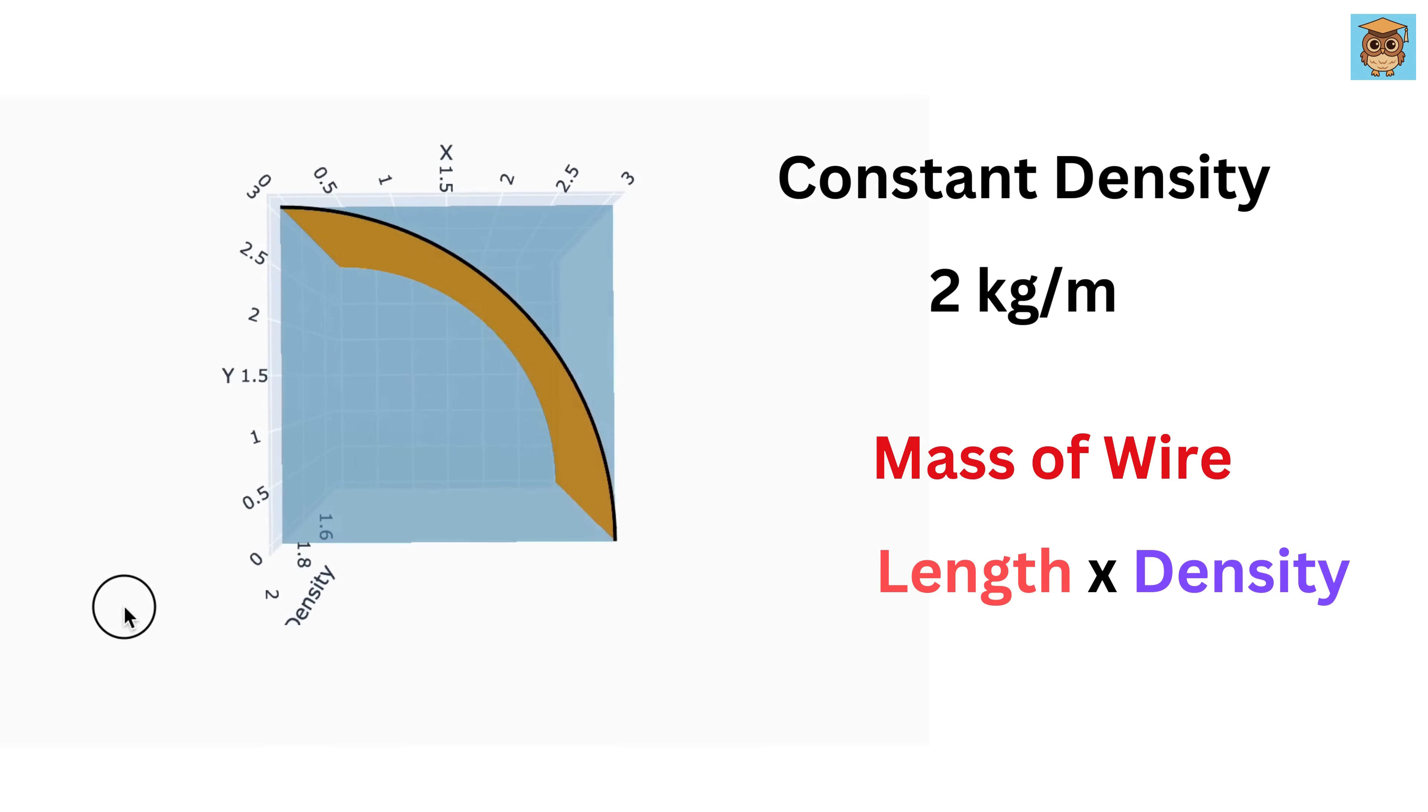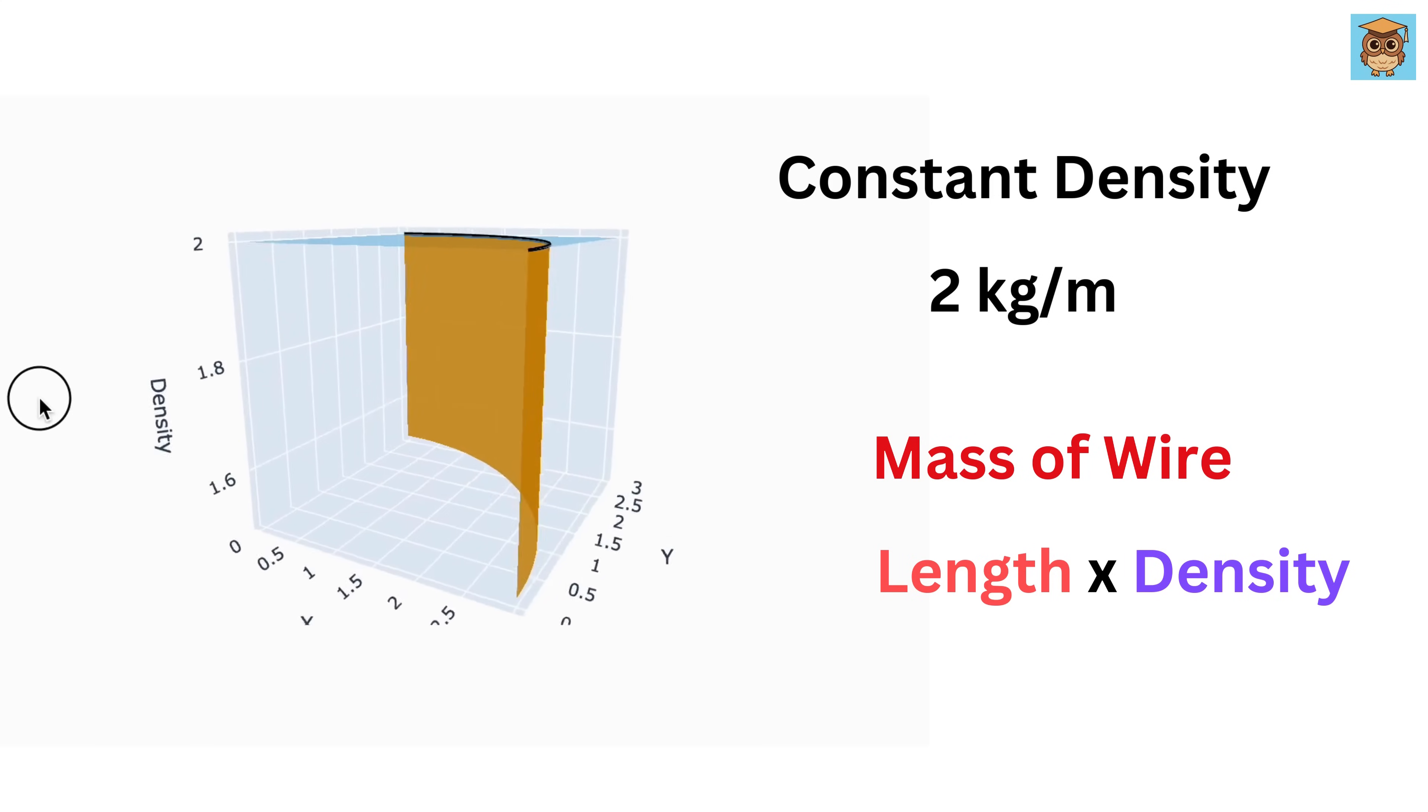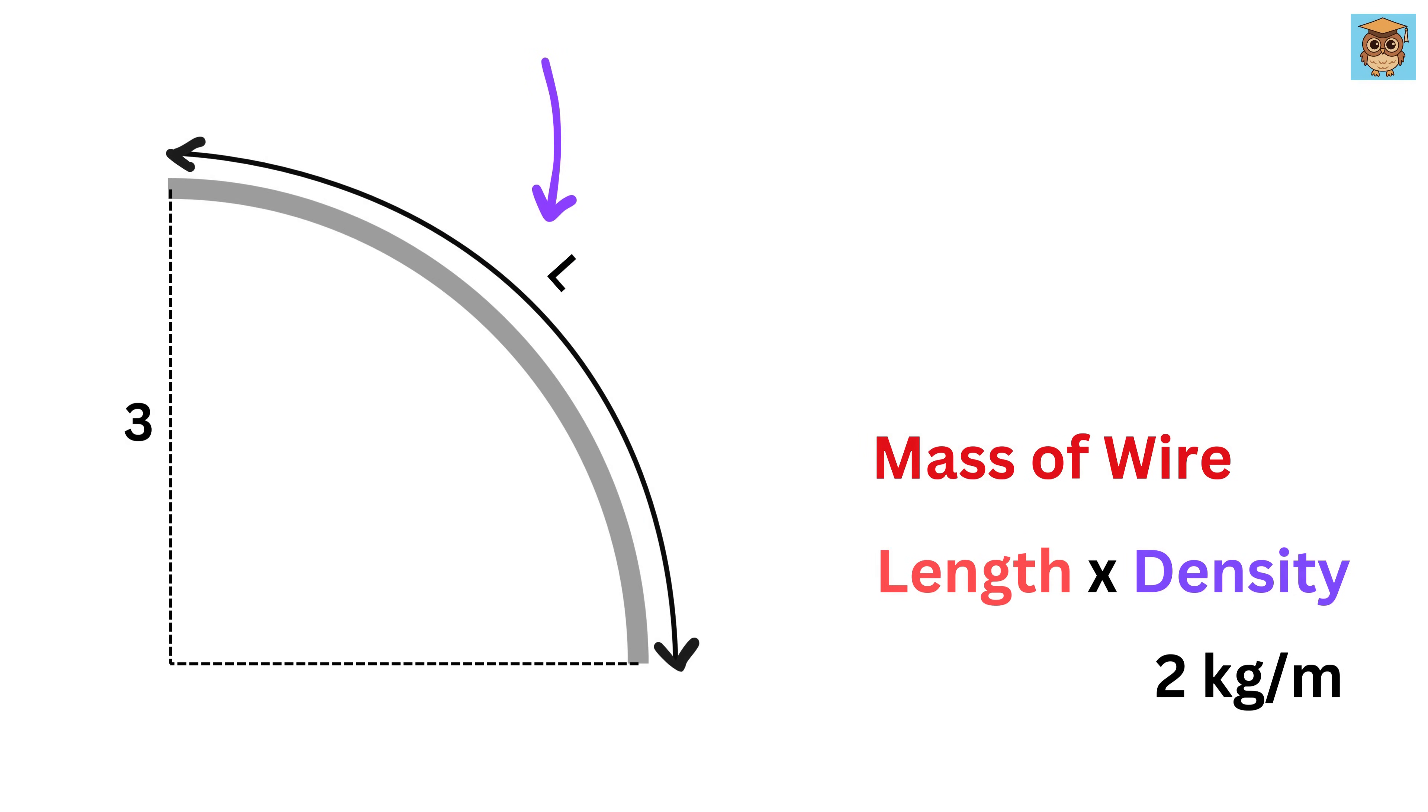The height of the orange ribbon is the same everywhere because it shows the density value of this wire. Now, L equals the length, or the perimeter, of the quarter circle, π r over 2, or π times 3 over 2, because the radius of this quarter circle is 3 meters. So the mass will be 2 times 3π over 2, or 3π kilograms.